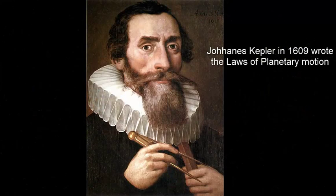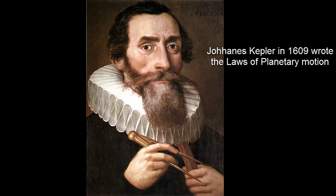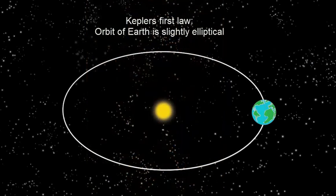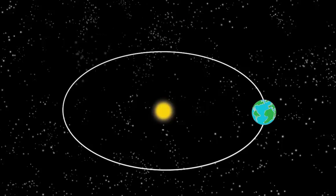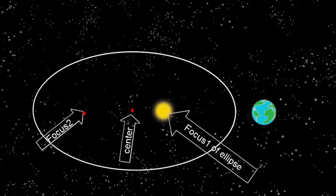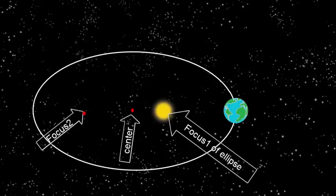The root cause of this inequality lies in the theory discovered by Johannes Kepler in 1609. In his first law, he showed that the orbit of the earth is slightly elliptical and that the sun is not at the center of an ellipse but at a slight offset at one of the two focuses of the ellipse.